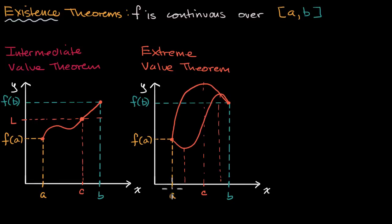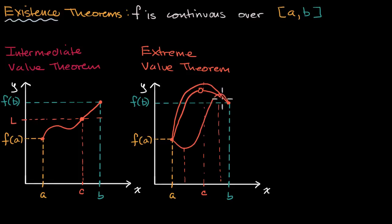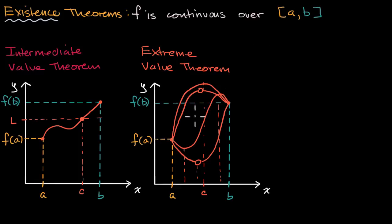They exist over that interval, and it might happen at a, it might happen at b. The only way I can construct something where these maximum or minimum — these extreme values — don't exist is if I make it discontinuous. For example, what if I had a graph where, right at where we thought we'd have a maximum value, we're discontinuous? Then you don't have a clear maximum value. Similarly, I could construct something where we do not have a clear minimum value, and so there does not exist an x where the function takes on a minimum value in that interval. But we are assuming continuity, so we will find these extreme values.